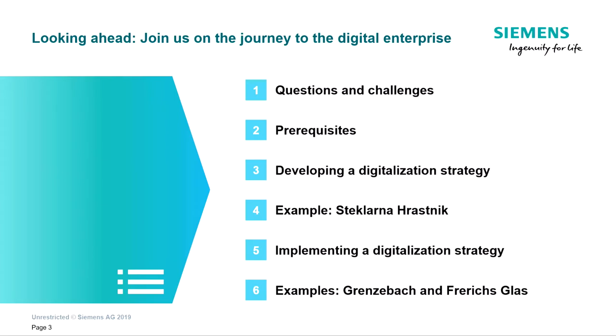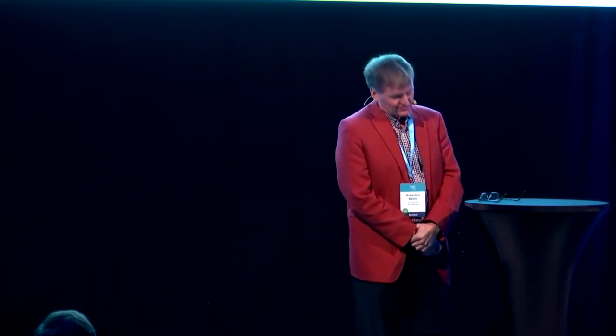I'm guiding you through the steps on how your company becomes an Industry 4.0 company, or a digital enterprise. So what is a digital enterprise? From our understanding, it is a totally paperless end-to-end manufacturing — from order entry to shipment — without any need for a human being to touch it. You get your orders digitally, you produce, you ship it out, and basically no human interaction is involved if all goes well.